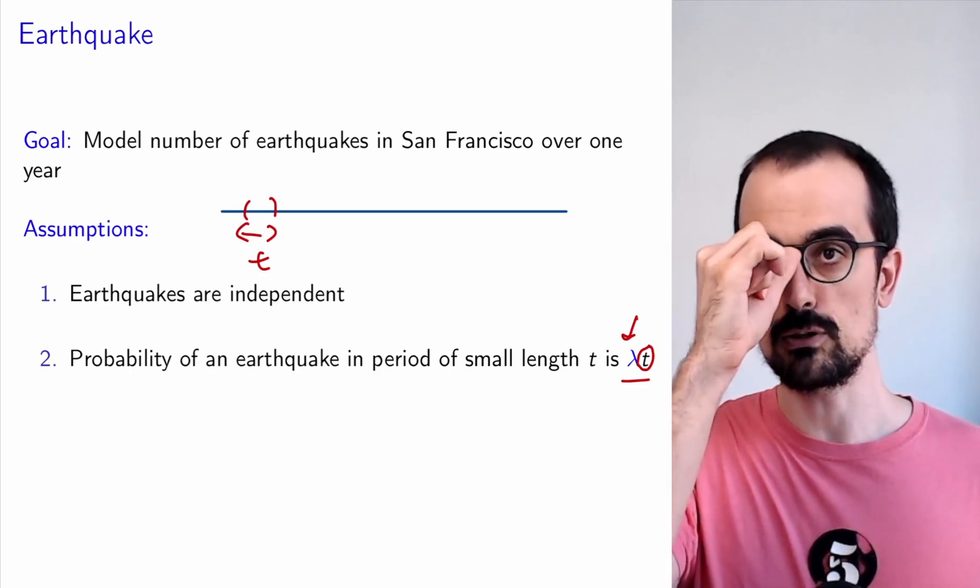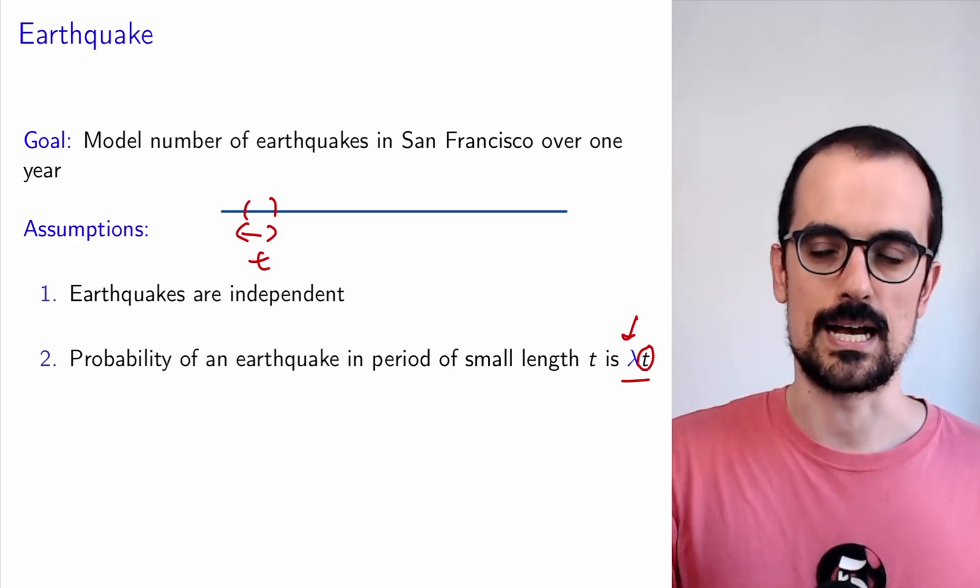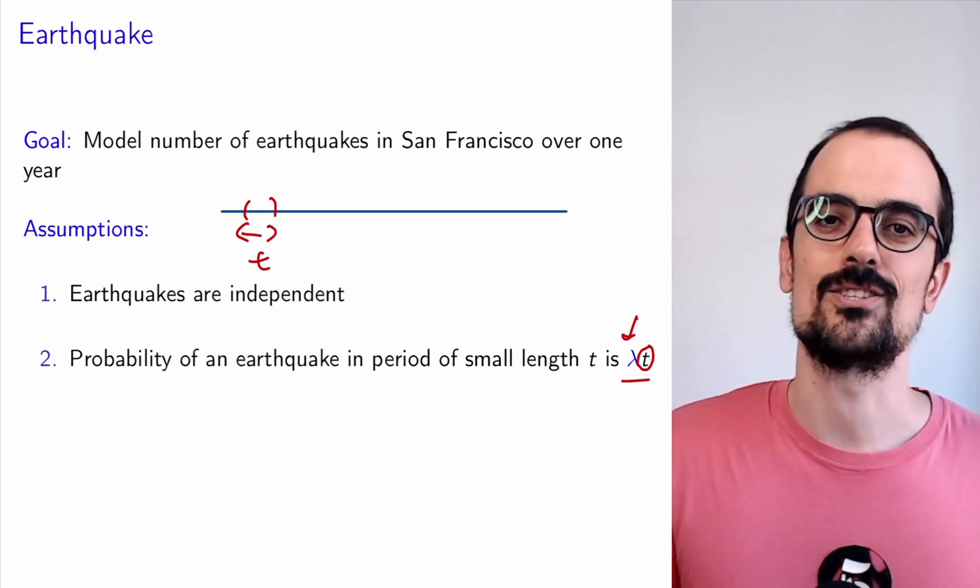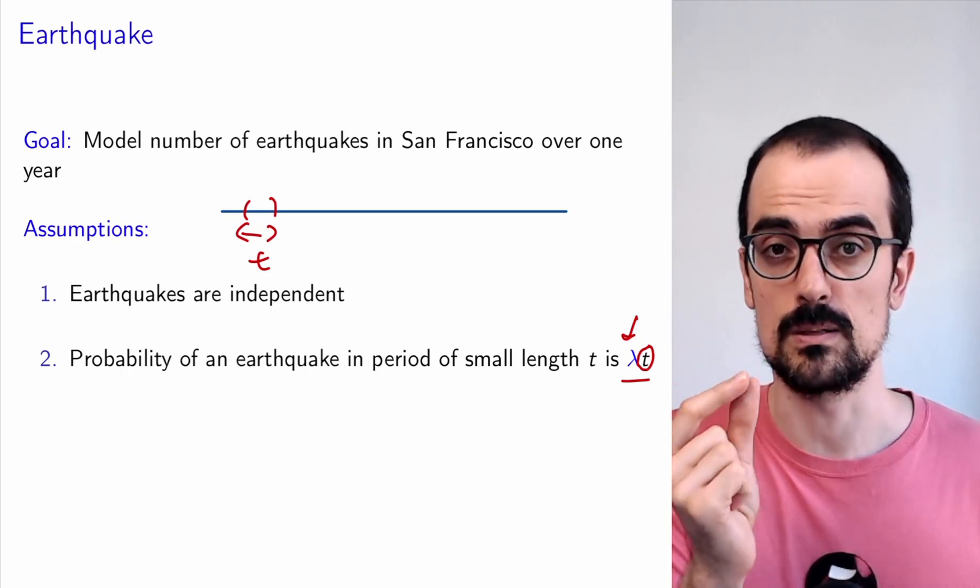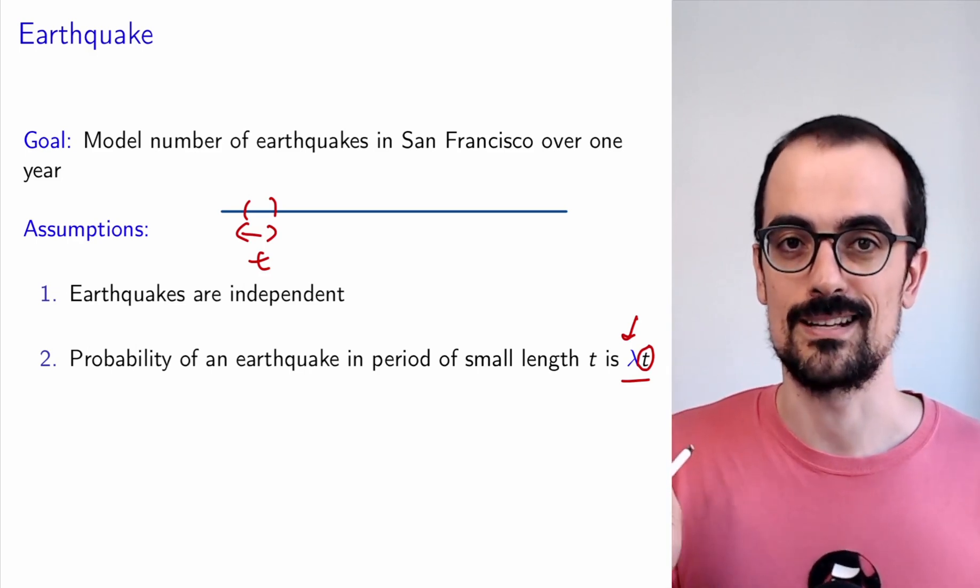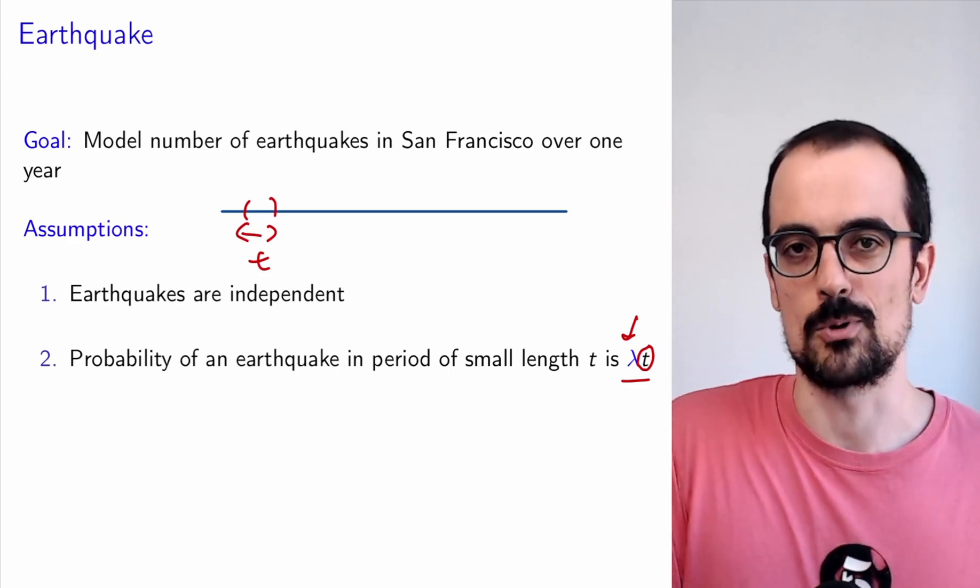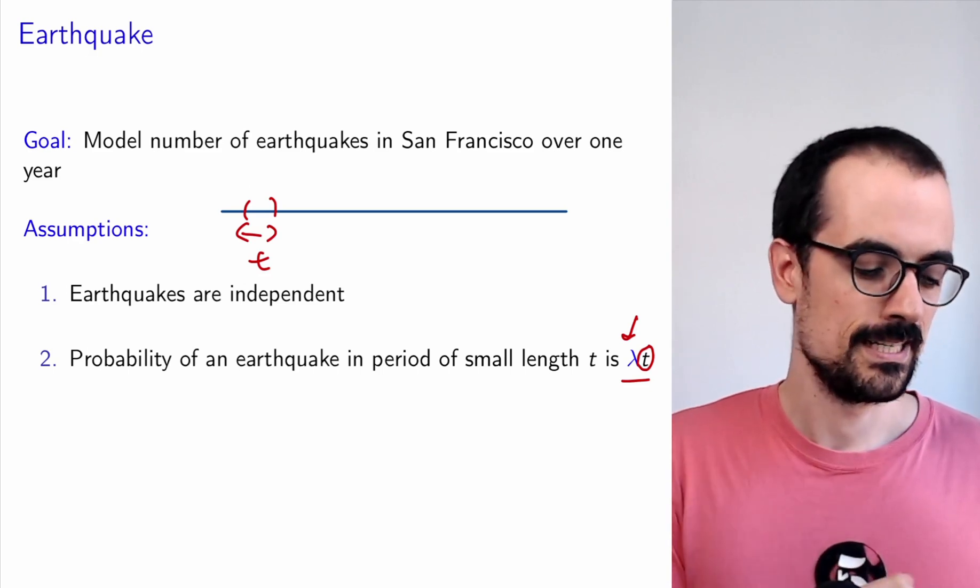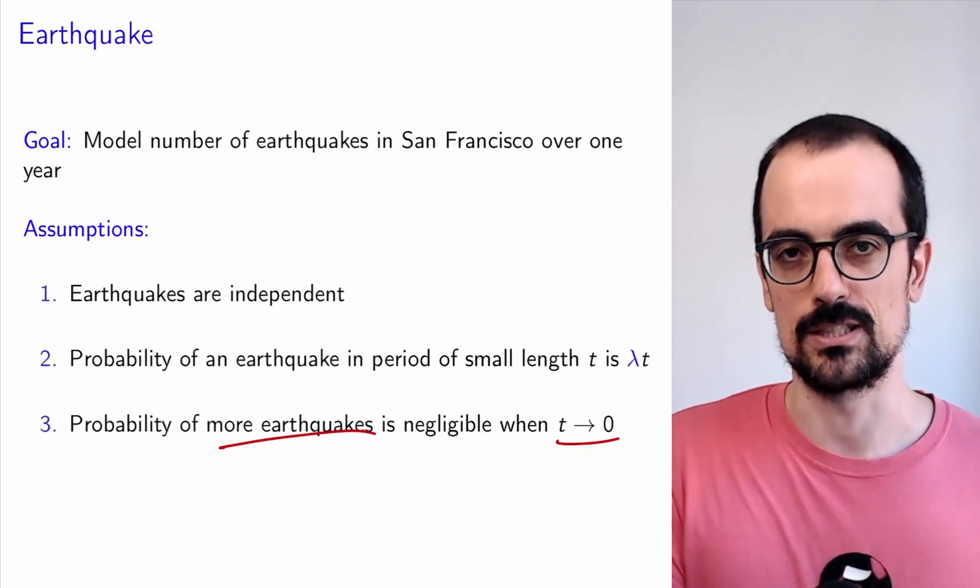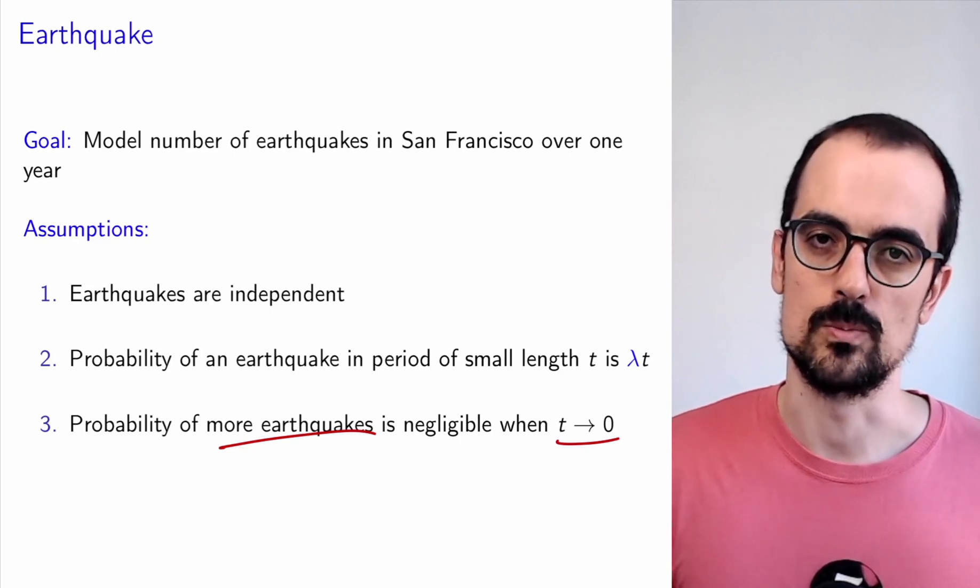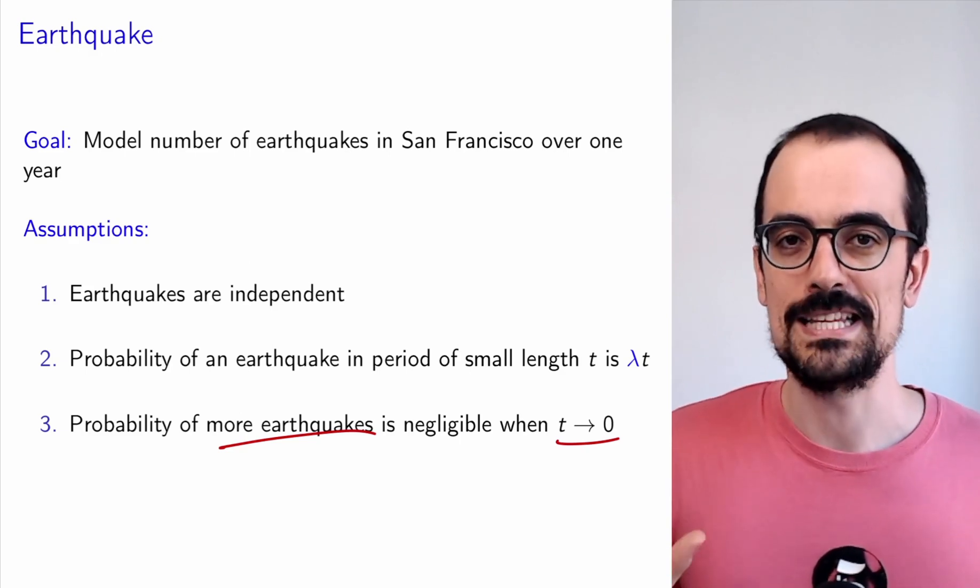Those are going to be our assumptions. They might look a little bit weird the first time you encounter them, but this is quite intuitive because the idea is there's events happening independently. The earthquakes just happen from time to time independently, and they happen at a certain rate, but we don't know when they are going to happen. And the way we capture that is by saying if you look at a very, very small interval, the probability of having an earthquake is proportional to this earthquake rate lambda. And if this interval is small enough, there's not going to be more than one earthquake, or the probability is just going to be negligible. This third assumption is this assumption that more earthquakes within a very small interval, we don't need to worry about that because it's going to be negligible when we take the interval's length to be zero.